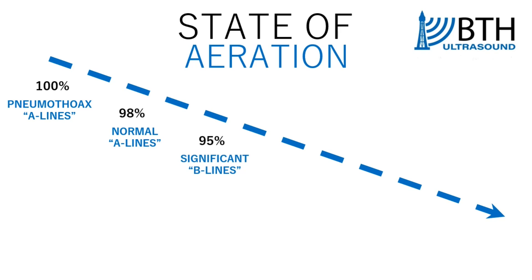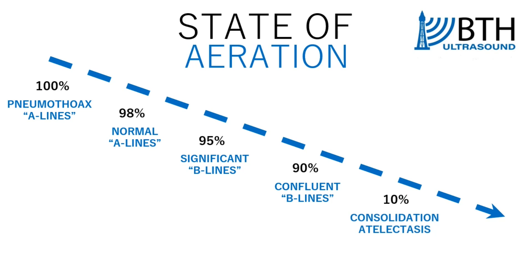As we head down the scale, you get less and less aeration of the lungs and more and more density as either air is removed or fluid starts to infiltrate into the lungs. So you start to get significant B lines through to confluent B lines through to a full consolidation, which could be pneumonic or potentially atelectasis, and then down to a pleural effusion where all of the air has basically been removed from the lung tissue.